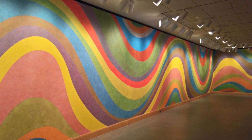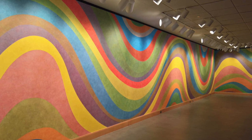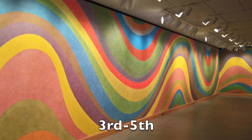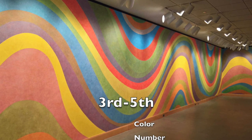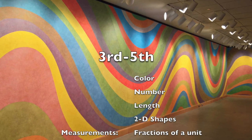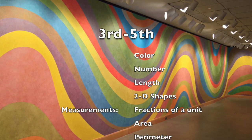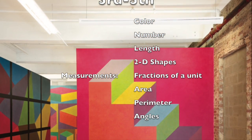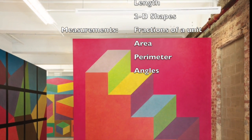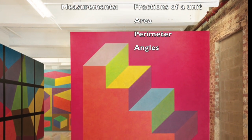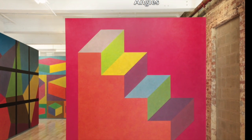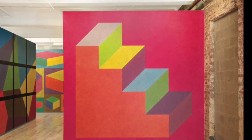If you teach students in grades three through five, you might have students focus on directions with references to color, number, length, and two-dimensional shapes. Directions could involve measurements that include fractions of a unit as well as references to area or perimeter. Types of angles might also be included, and students can even exchange directions and create artwork based on someone else's description.